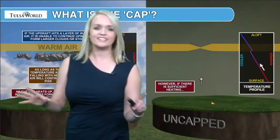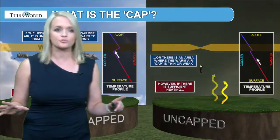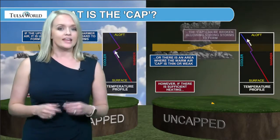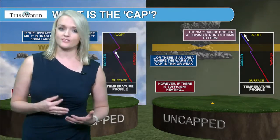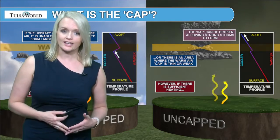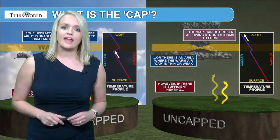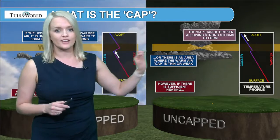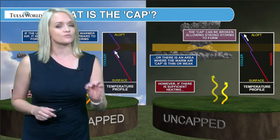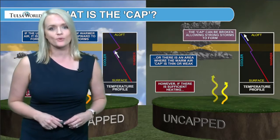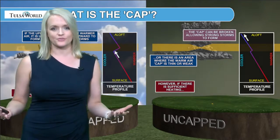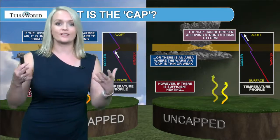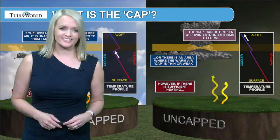Now there are, of course, many times where we have uncapped storms, and these are the severe storms that develop. In this case, what's going on is that you either have sufficient heating at the surface, or there's an area where the cap — the warmer air — is thinner or weaker, and at that point the cap can be broken. It allows for these strong storms to violently move upward vertically and form severe storms.